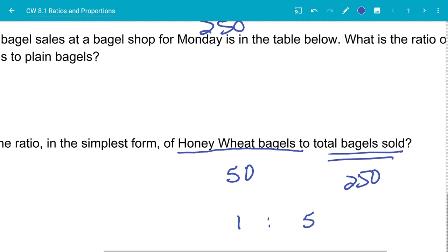So I can write this out in three different ways. I can say one to five as a fraction, one colon five, or one to five. And the order of honey wheat to total is the way that it goes there.